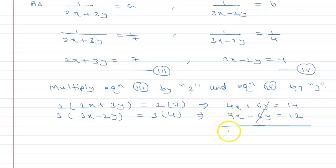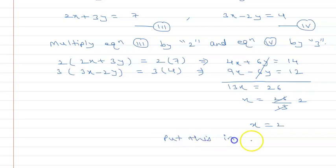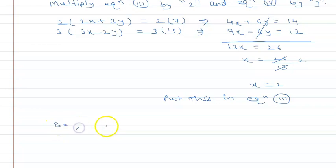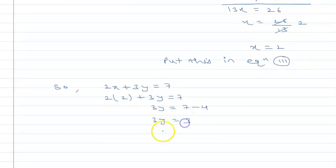Adding these two equations, 6y and −6y cancel. We get 9 + 4 = 13x, and 14 + 12 = 26, so x = 26 upon 13 = 2. Substituting x = 2 into equation 3: 2×2 + 3y = 7, so 4 + 3y = 7, giving 3y = 3, therefore y = 1.